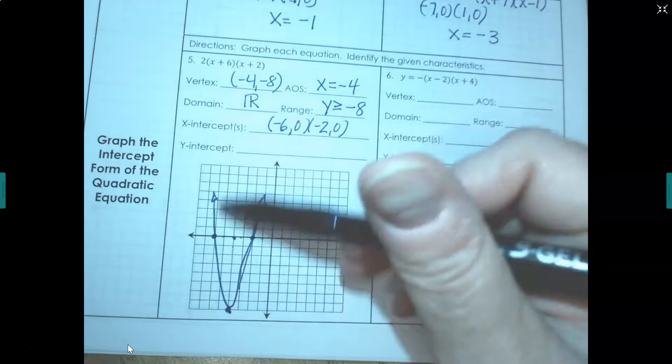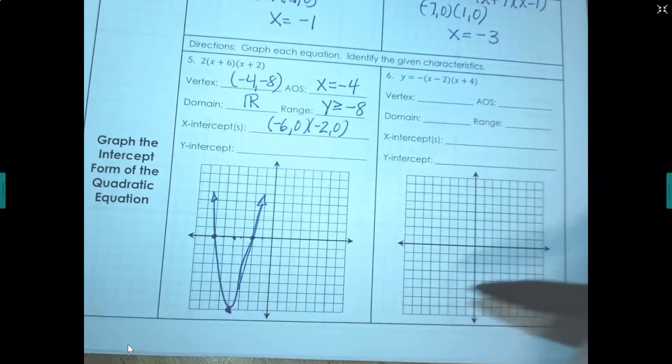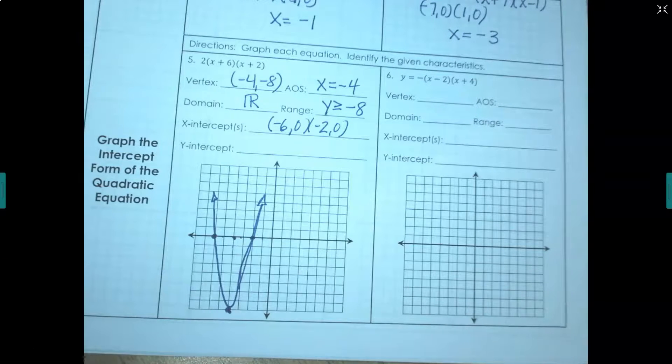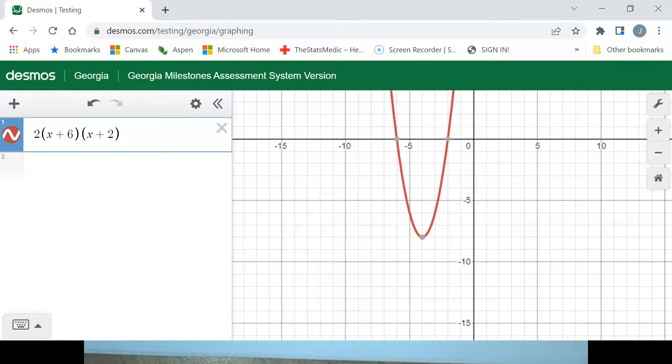Then our y-intercept, we can't see it on here. Just because you can't see it does not mean it doesn't exist. Your y-intercept is where x is 0.